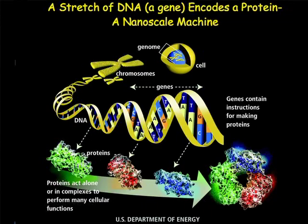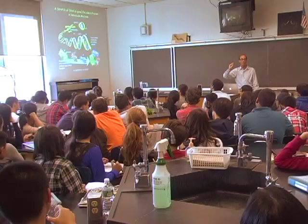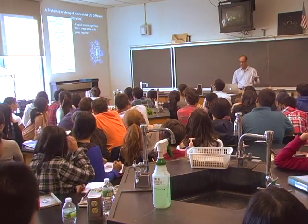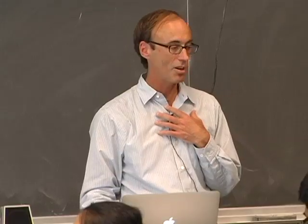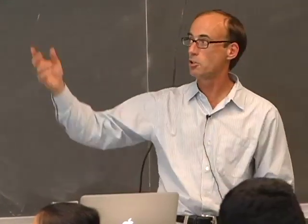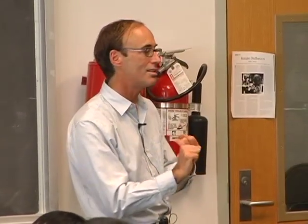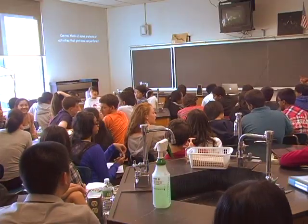Engineers are quite interested in understanding how biological systems created through evolution do what they do. These things are proteins made by the genome — the genome is just the instruction book churning out proteins that act as machines. A typical protein may have about 500 amino acids. My favorite motor protein, kinesin, has about 960 amino acids that come together to create a machine that acts as an engine. Think of another protein machine — just talk to your neighbor for one minute.